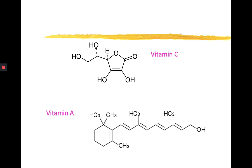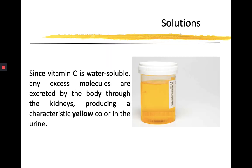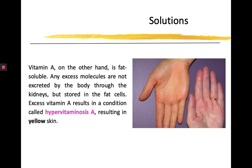Take note that we take them in as micronutrients. Vitamin C can easily be secreted through the urine, while vitamin A, D, E, and K - that's vitamin ADEK - these are non-polar molecules. Most likely, they will be soluble in non-polar solvents as well, such as fat. That's why we call vitamin ADEK fat-soluble vitamins. Vitamin C is water-soluble. Any excess molecules are excreted by the body through the kidneys, producing a characteristic yellow color in the urine. That's what you'll notice if you drink Enervon C or whatever vitamin C there is - you can expect your urine to be colored yellow.